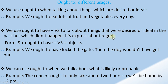This past form expresses regret. Structure: subject + ought to have + verb 3 + object. Example: 'We ought to have looked at the gate — then the dog wouldn't have got out.' We can also use 'ought to' when talking about something that is likely or probable. Example: 'The concert ought to only take about two hours, so we'll be home by 12 p.m.'